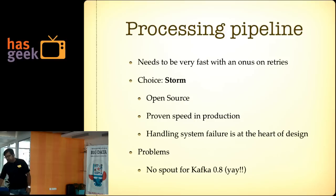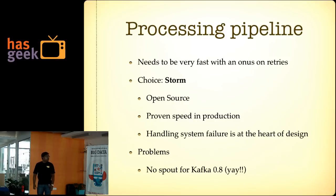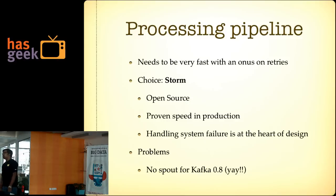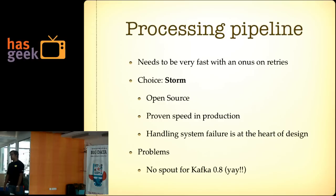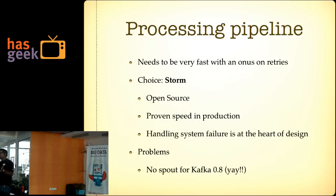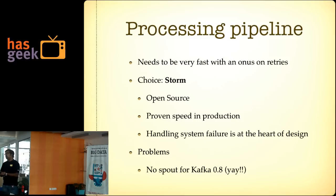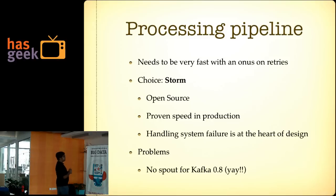We are currently in the process of moving away from MongoDB — I'll discuss the reasons later. For the processing pipeline we wanted something good with writes, and it was Storm without question. There is a seminal talk by Nathan Marz, the creator of Storm, where he describes the philosophy behind it: your systems will go down — even Storm itself will go down, including supervisors and Nimbus — but everything should be able to recover once the dependent components are up. Storm is built on the philosophy of being very fast and having recoverability.